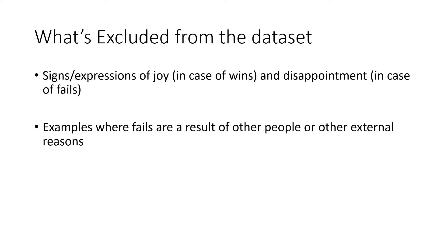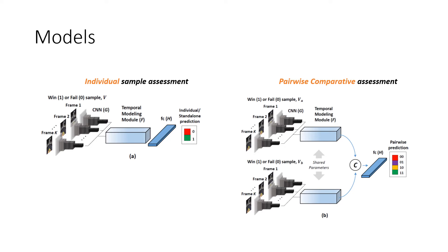We also retained only the samples where winning or failing was a consequence of the person under consideration and not of other external people. For our WinFail action recognition task, we considered two types of models: the first is individual sample assessment, which is the same as typical action recognition models, and the second is a pairwise comparative approach.